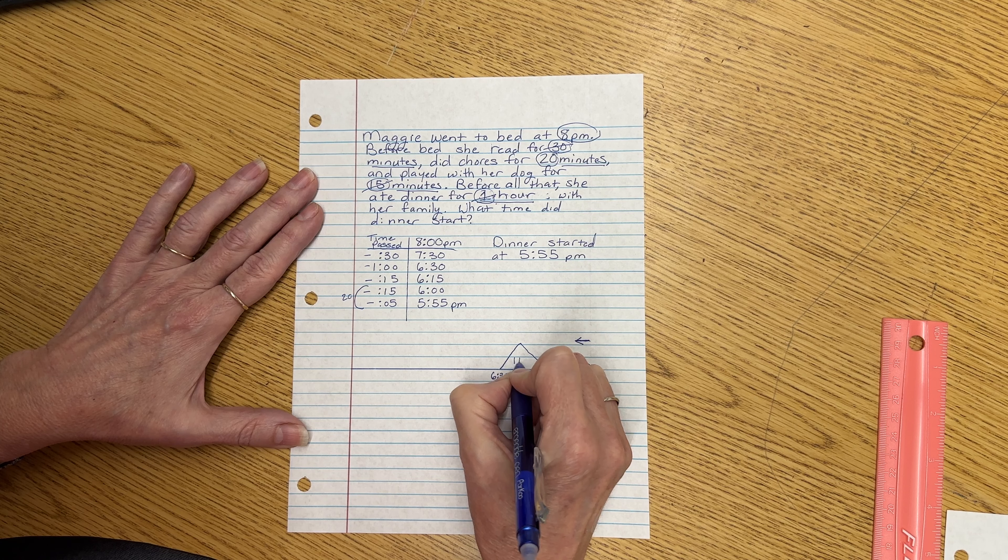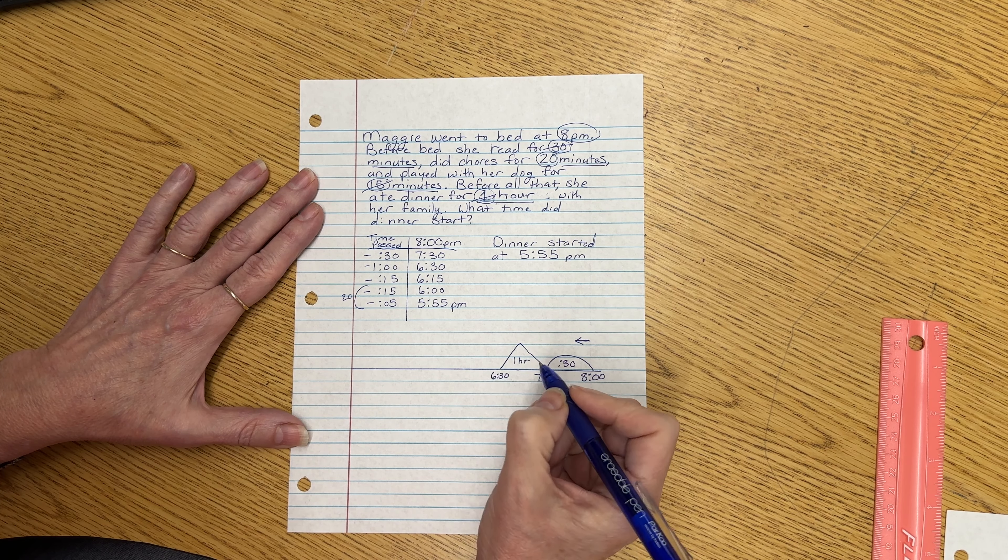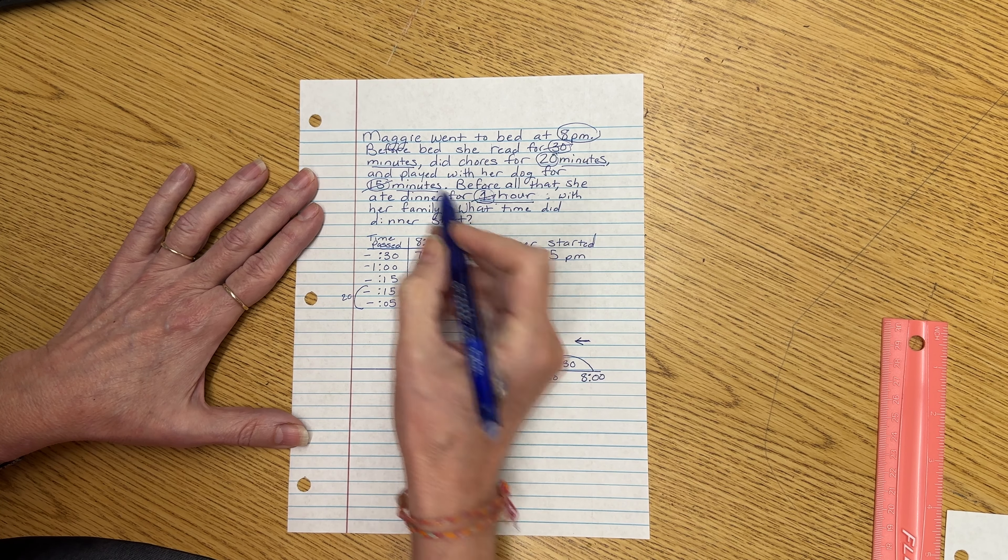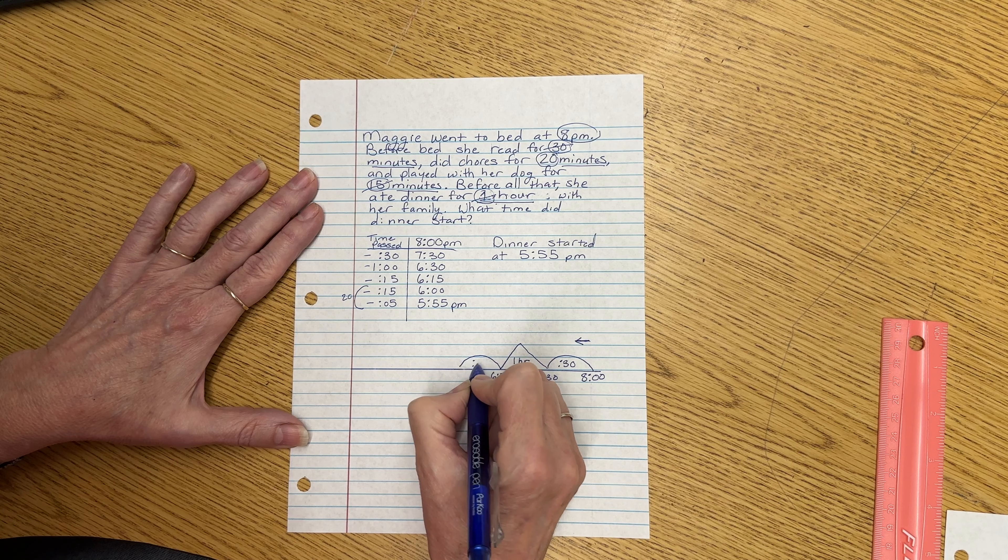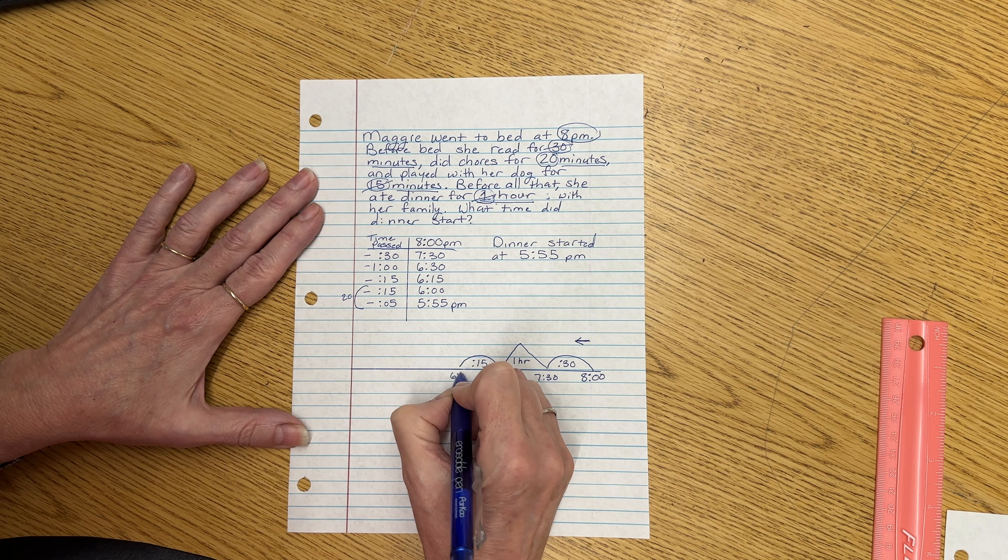And I like to write one hour in our mountains. Even though we know each time we use a point like that, it's going to be an hour. Then we do another hill for our 15 minutes. And that will get us to 6:15.